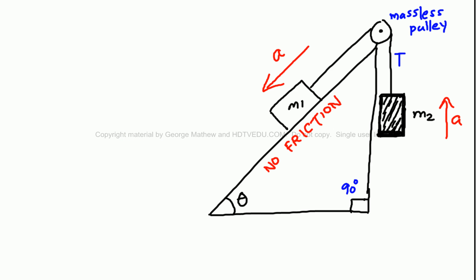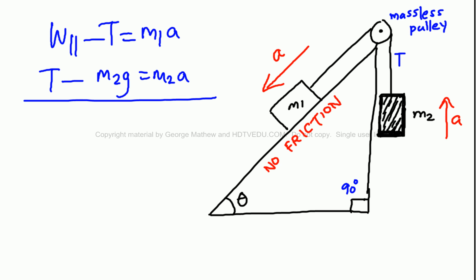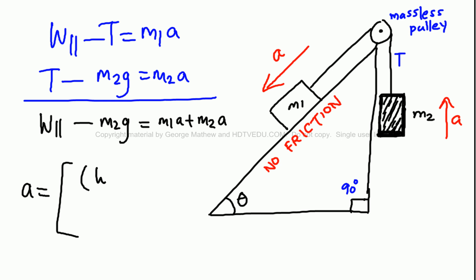Now let us put those equations on a new page. W parallel minus T equals M1A, and T minus M2g equals M2A. Adding the two equations: the T and minus T cancel out, giving W parallel minus M2g equals M1A plus M2A.